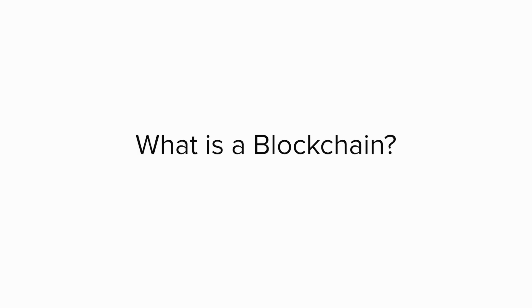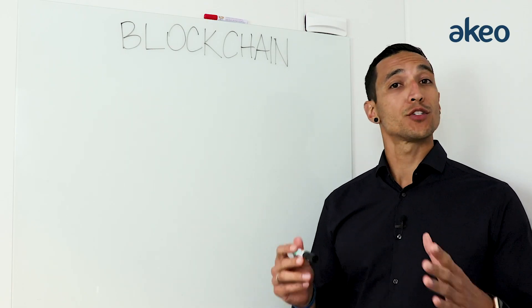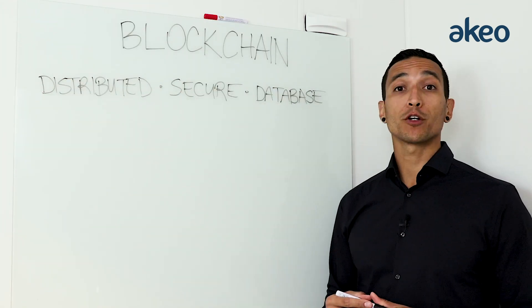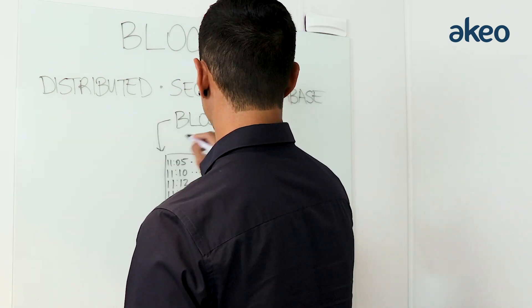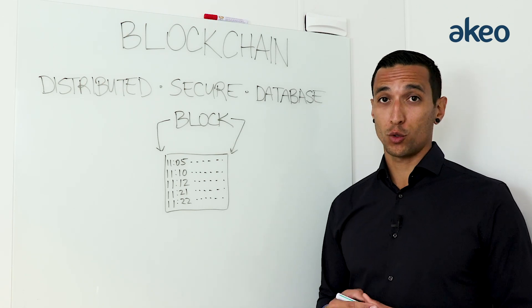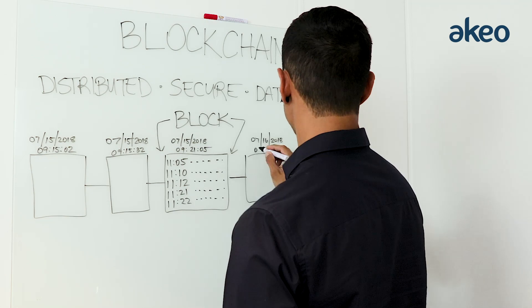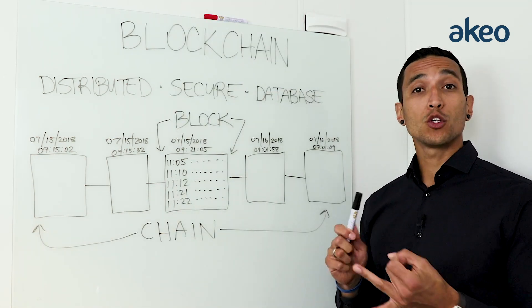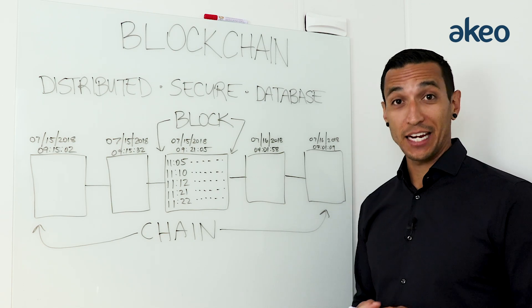What is a blockchain and how does it work? A blockchain is essentially a distributed secure database. The block refers to a collection of time-stamped data and the chain refers to a link of time-stamped blocks, hence the name blockchain. You can view it, you can add to it, but you can't change it, you can't manipulate it, and you can't delete it.